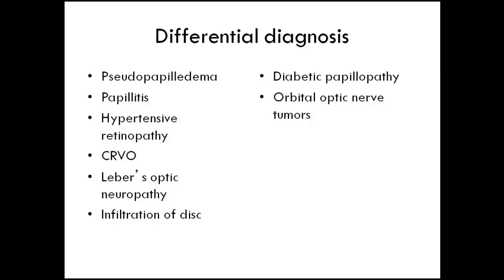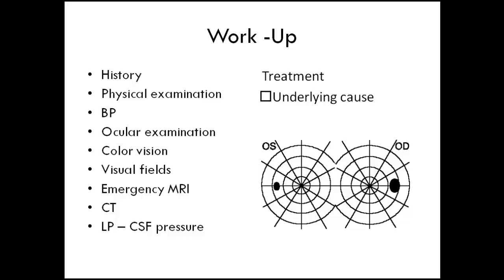Differential diagnosis of papilledema includes pseudopapilledema, papillitis, hypertensive retinopathy, central retinal vein occlusion, infiltration of the disc, diabetic papillopathy, and orbital optic nerve tumors — in all these cases the disc appearance may be similar, but history and systemic examination will differentiate them. Another important differential diagnosis is benign intracranial hypertension.